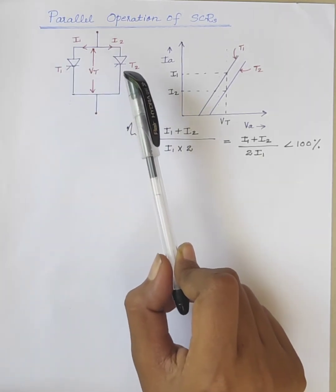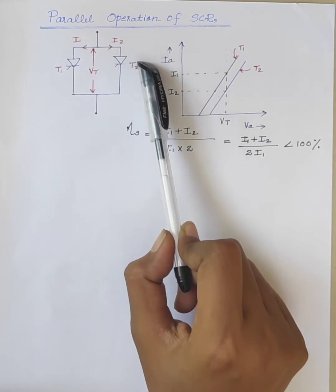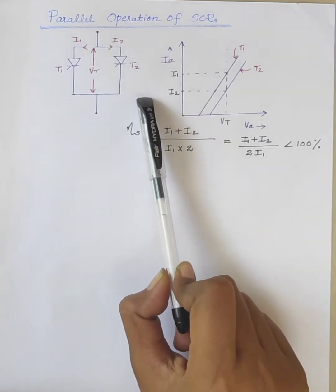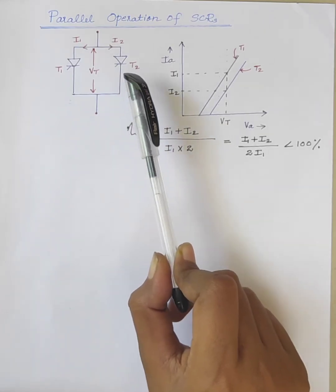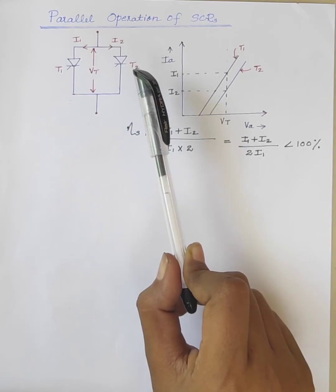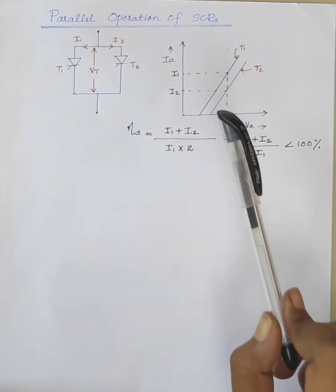As a result, T2 will have to share the entire load current. Therefore, T2 is overloaded and damaged because of the heating due to over current.